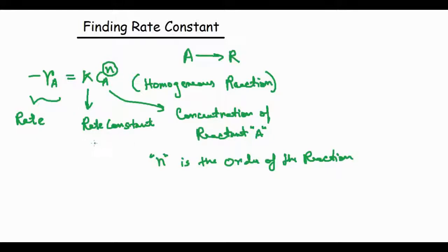Now we are going to talk about the rate constant. For a homogeneous reaction, this rate constant depends only on temperature. There are various laws by which we can find this rate constant as a function of temperature. Let's discuss those laws one by one.